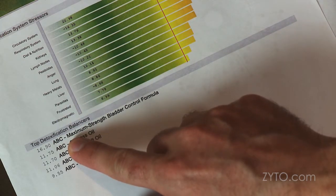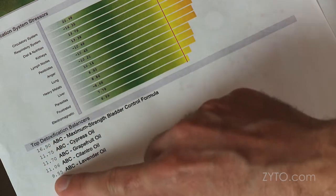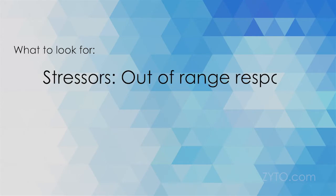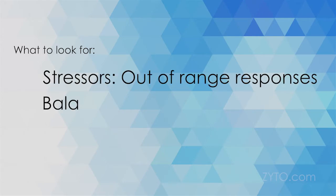Let's get back to our report. Just like our friend sorting the movies, here's a list of several balancers that were scanned, listed from greatest to least positive. With this understanding, you should be able to review reports like a pro and start asking better questions and making better decisions to support healthy lifestyle choices — like what products you want to take and making adjustments in your diet. If you simply remember to look for out-of-range responses for stressors and high positive numbers for balancers, you're on your way to becoming a ZYTO Report Pro.